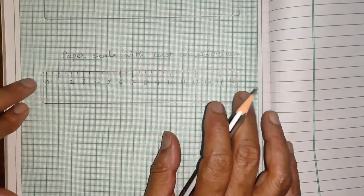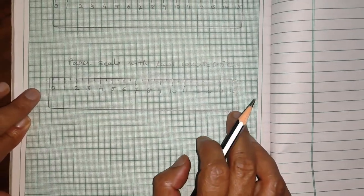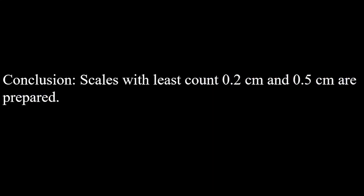So, now, my paper scale with least count 0.5 cm is ready. I hope you have enjoyed this activity. The conclusion is, paper scales with least count 0.2 cm and 0.5 cm are prepared. That's all in this video. Thank you.